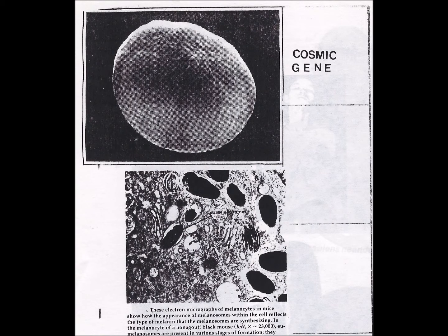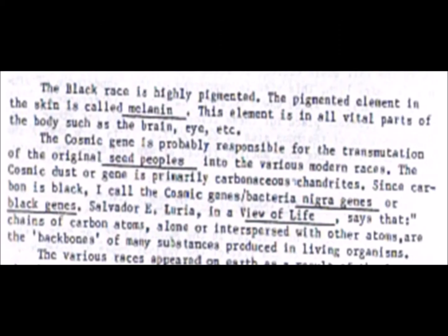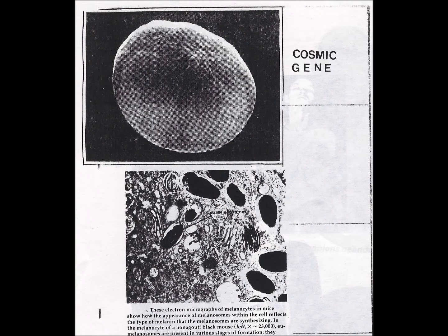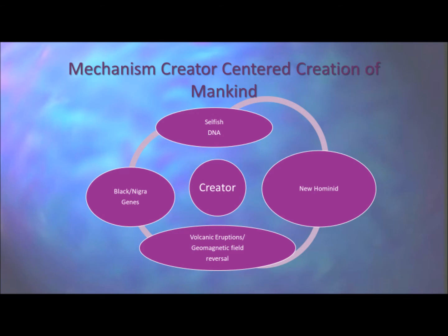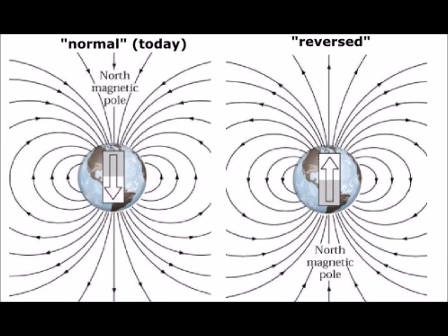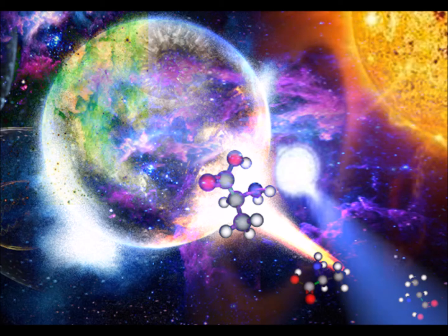The black race is highly pigmented. The pigmented element in the skin is called melanin, which is found in all vital parts of the body such as the brain and the eye. The cosmic gene is probably responsible for the transmutation of the original seed people — black people — into the various modern races. The cosmic dust or gene is primarily carbonaceous. Since carbon is black, this is called the bacteria nigra gene, or black gene. Chains of carbon atoms, alone or interspersed with other atoms, are the backbones of many substances produced in living organisms. As you can see, the black gene is very important.